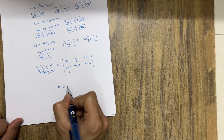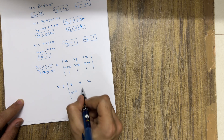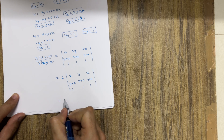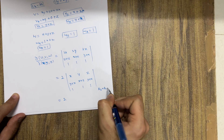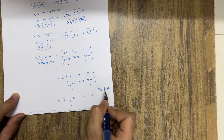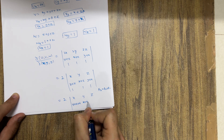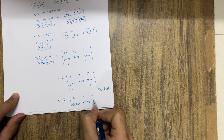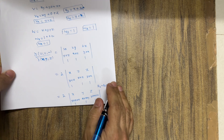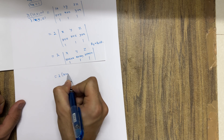I take 2 common from the first row, leaving x, y, z. Then I apply the row transformation R2 = R2 + R1, giving the second row as y+z+x, x+z+y, y+x+z — each entry equals x+y+z. I then take x+y+z common from the second row, so the factor becomes 2(x+y+z), leaving the second row as 1, 1, 1.